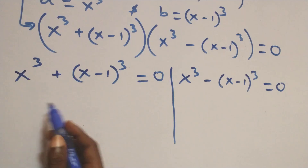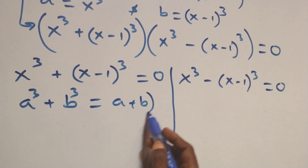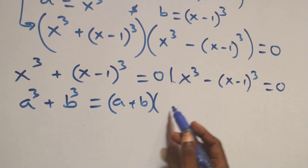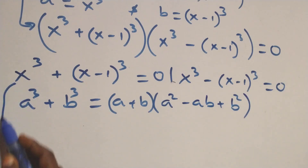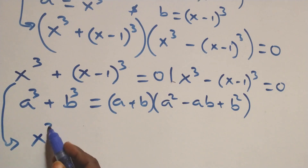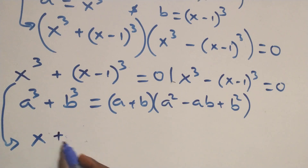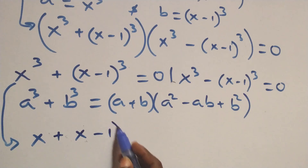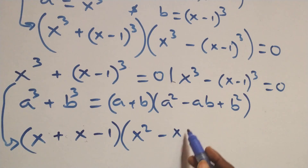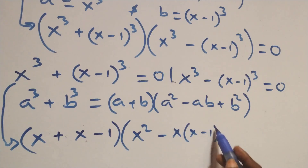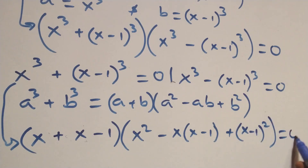Solving Case 1 using the identity a³ + b³ = (a + b)(a² − ab + b²): this becomes (x + (x−1)) times (x² − x(x−1) + (x−1)²) equals 0.